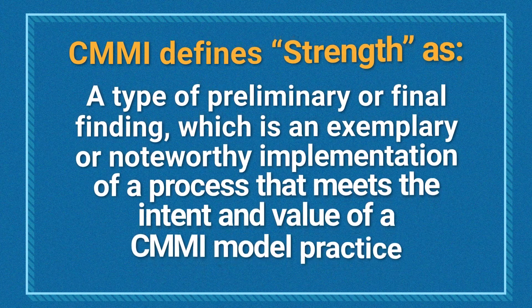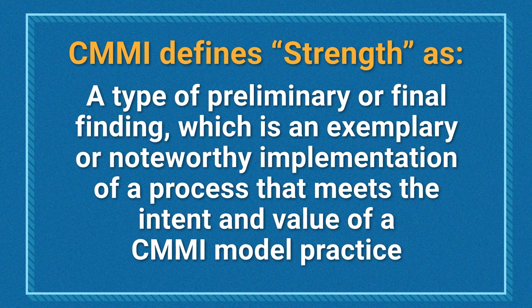The CMMI model defines a strength as a type of preliminary or final finding which is an exemplary or noteworthy implementation of a process that meets the intent and value of a CMMI model practice. In other words, a strength finding must exceed what the model is asking for. In practice, it's difficult to get a strength because the model practices are comprehensive. This means that strengths are rare and not the norm.